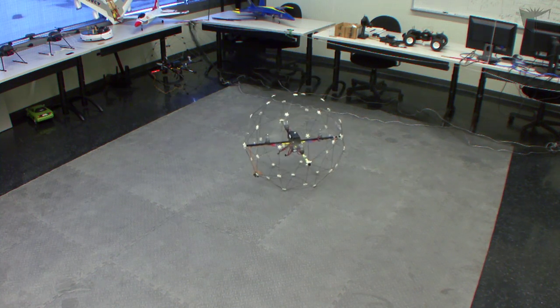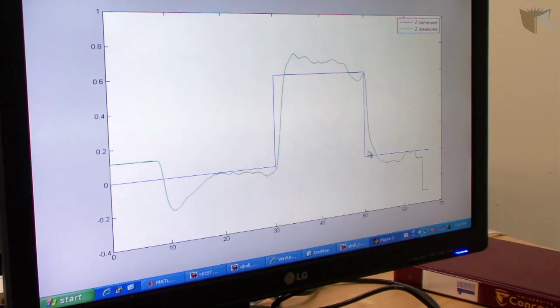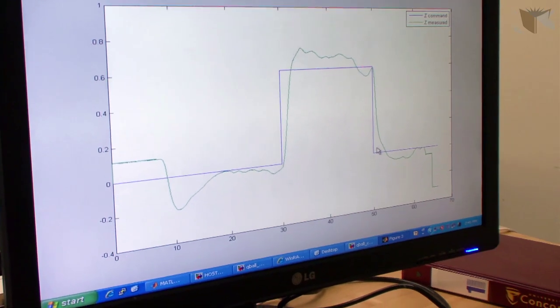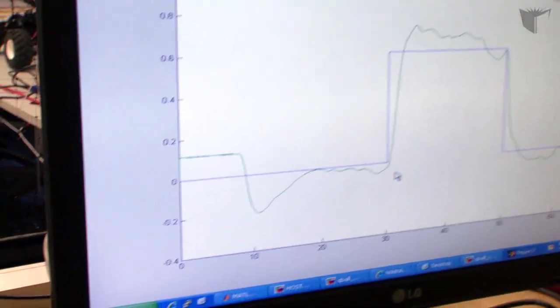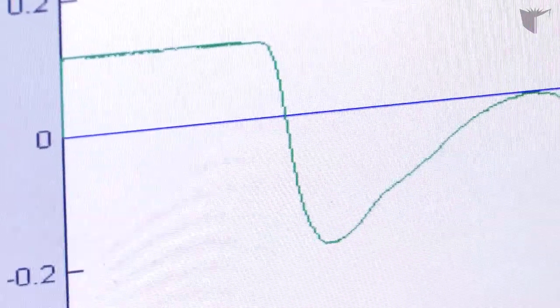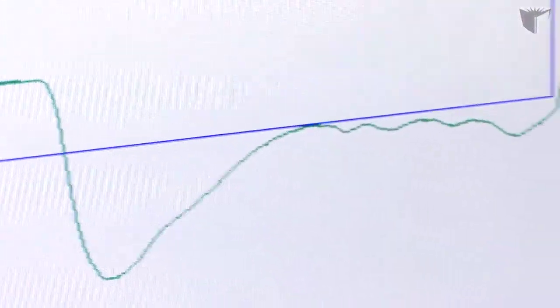For the last flight, you can see the plot. The blue line is the trajectory we gave to the Qball and the green line is the real position of the Qball which tracks the trajectory.